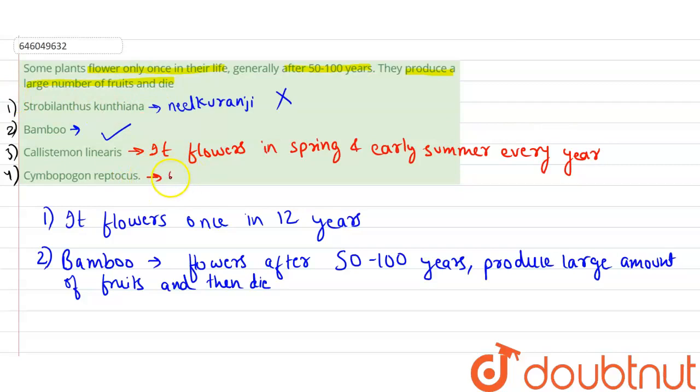And the last option is Sympogon reptocus. Actually it rarely flowers and it does not show any specific pattern of flowering. So this is also not the correct option.